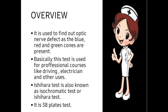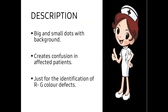Many more courses require that a person should be color normal. The Ishihara test is also known as the isochromatic test — isochromatic test is another name for the Ishihara test. It is a 38-plate test; different plates are there — 38 plates in total.